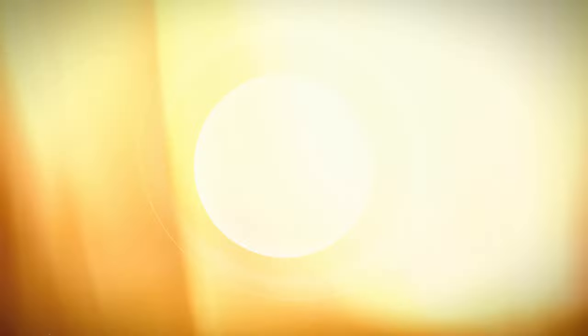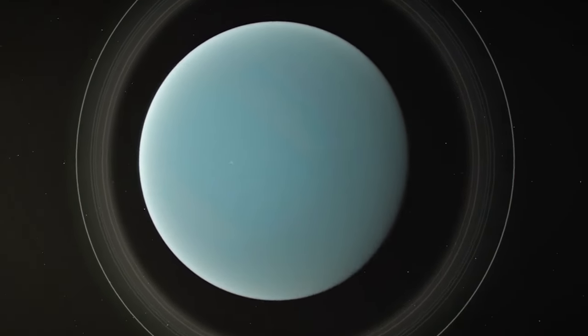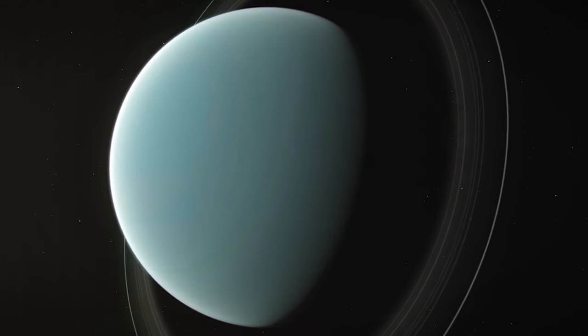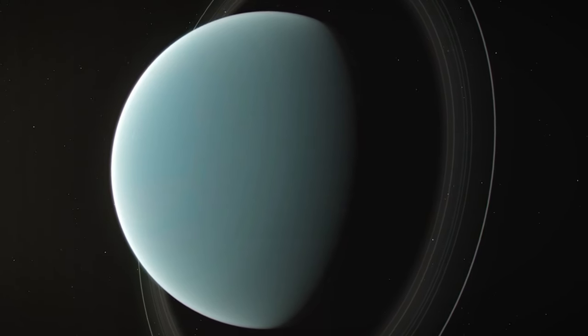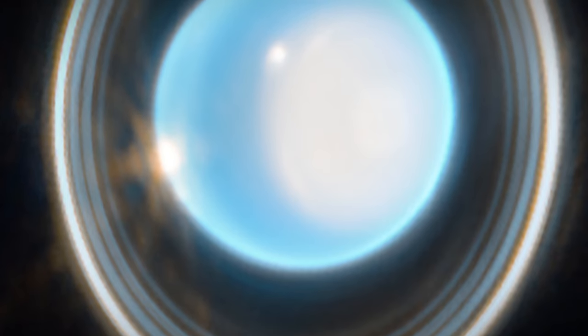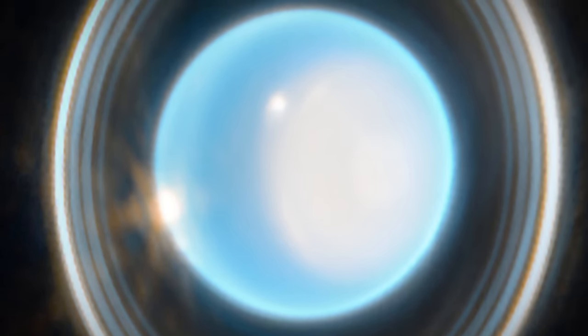This is crucial, because the rings of Uranus are composed of microscopic dust particles and larger chunks of ice, each reflecting sunlight at different intensities and wavelengths. By analyzing these emissions, scientists can deduce the size distribution of these particles and the possible mechanisms of their formation.